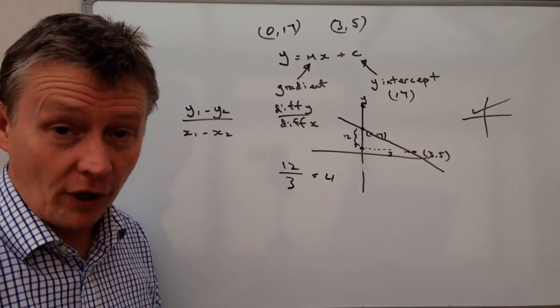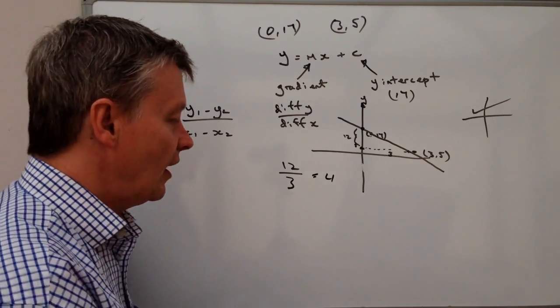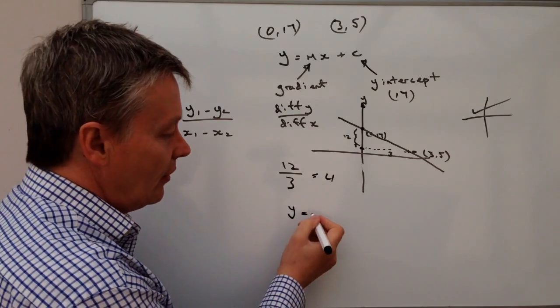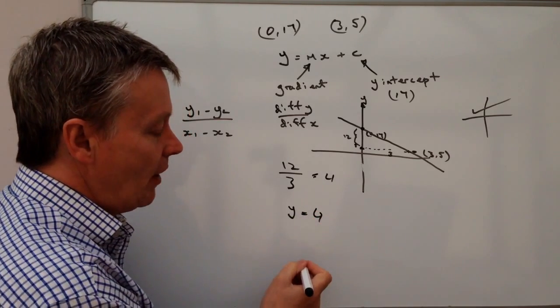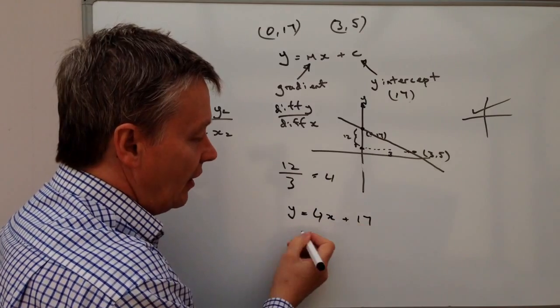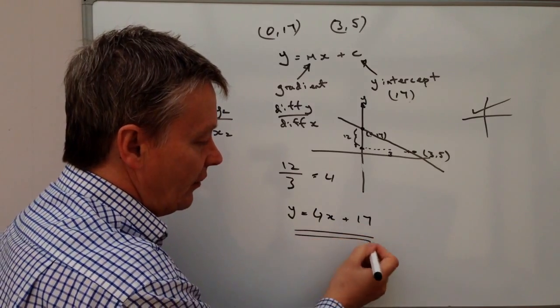So in other words, I can now write my equation, and I can write it out as y equals negative 4, which is the value of m, x plus 17, and that would actually answer the question.